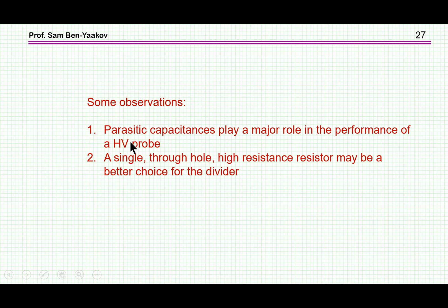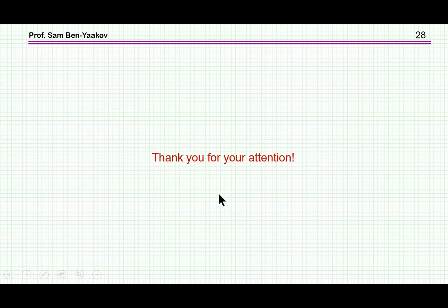So what are the observations here? First of all, we realize that parasitic capacitances play a major role in the performance of a high voltage probe. The divider really will suffer a lot from parasitic capacitances. And then I think that a single through-hole high resistance resistor may be a better choice rather than having many small SMD resistors, because a single resistor will have one capacitance or overall capacitance to the surrounding and in between the terminals, which you can then compensate by adding a capacitor to the circuit. So this is the end of this presentation. I thank you very much for your attention. I hope you found it of interest and perhaps it will be useful to you in the future. Thank you very much.